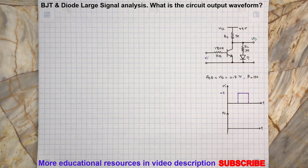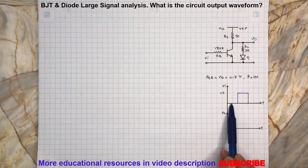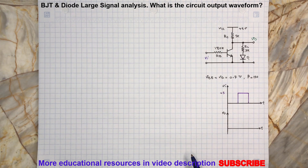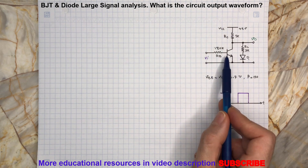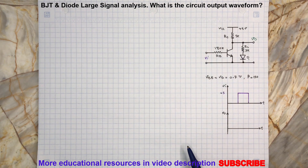Let's assume we have a zero input, which means VI equals zero volts. In this case, the transistor will remain off because its base-emitter junction is not powered. So no current will flow through the resistor RB and base, and there won't be any current flowing through the transistor's collector either.